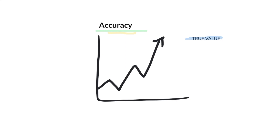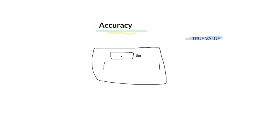Another real life example would be a scale and checking weight. If you go to the doctor's scale, those are usually pretty precise and you get a weight of 210. Then you go home and your scale reads 205. There's a discrepancy there — we're not sure which measure is off, but we know that one of the scales is inaccurate.